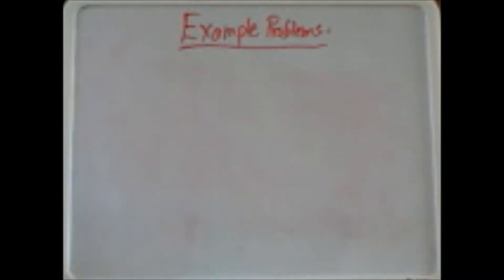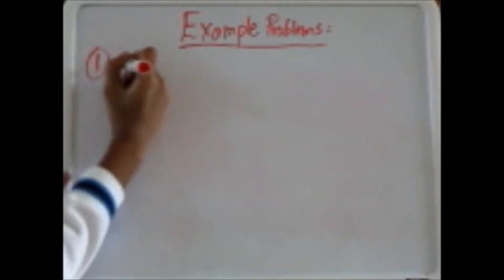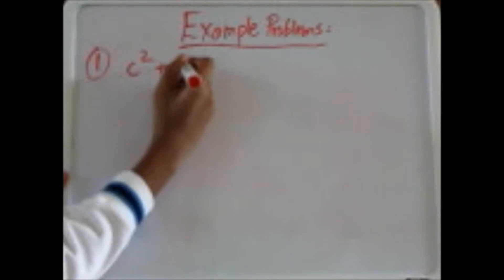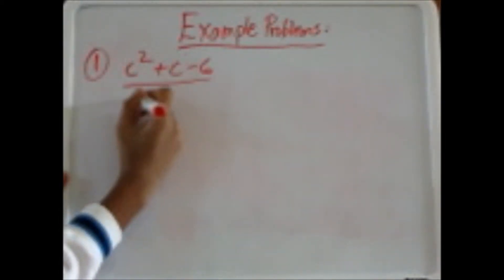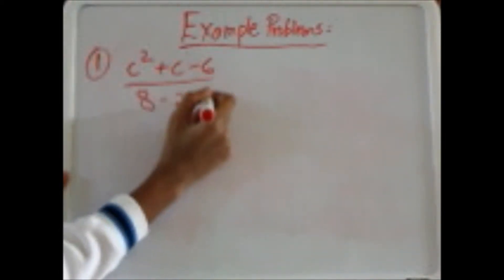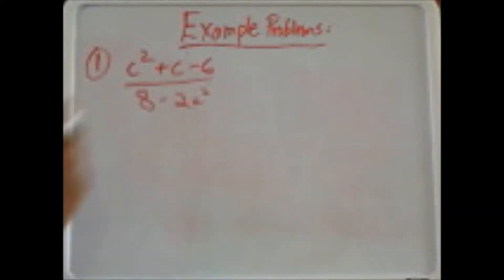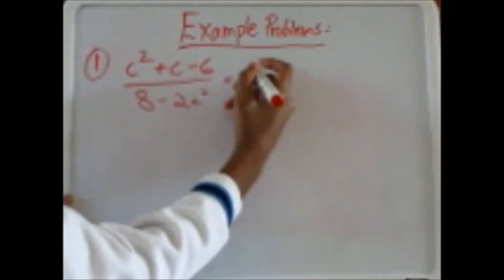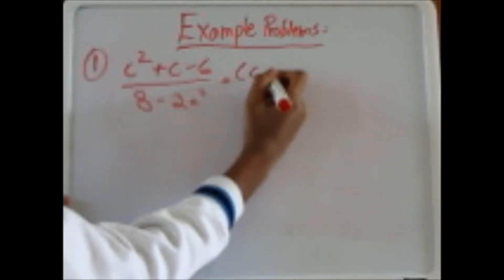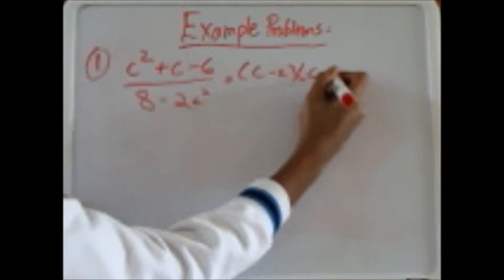Now let's do some example problems. The first example is c squared plus c minus 6 over 8 minus 2c squared. According to our steps, the first step is to factor out. On the top, c squared plus c minus 6 can be factored to c minus 2 times c plus 3.